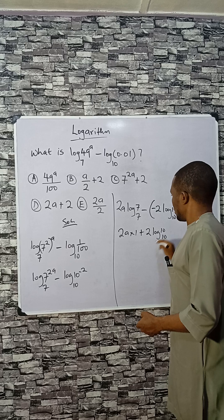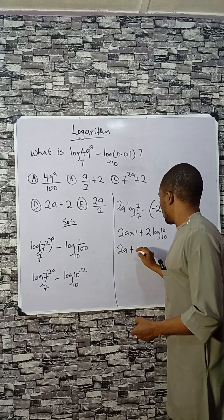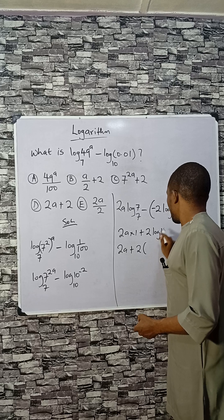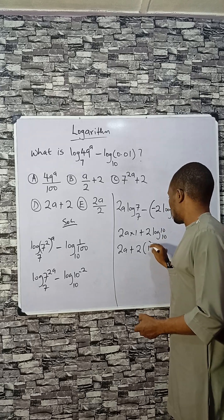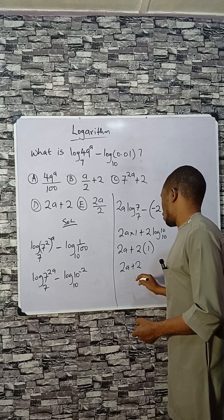2a plus 2 times log 10 base 10 is 1. Now it is 2a plus 2.